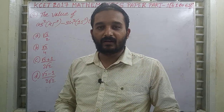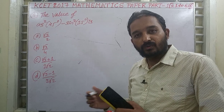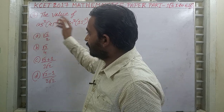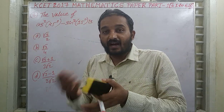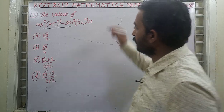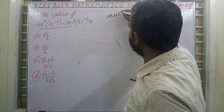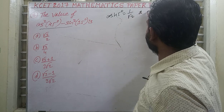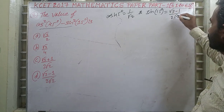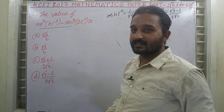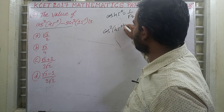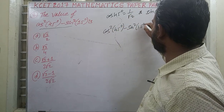Question 2 is based on the chapter Trigonometry, from the first year. Usually they ask one or two questions on this chapter. This question is based on standard angles. Using standard angles we have to find the value of cos²45° − sin²15°. We know cos 45° = 1/√2, and sin 15° = (√3 − 1)/(2√2).